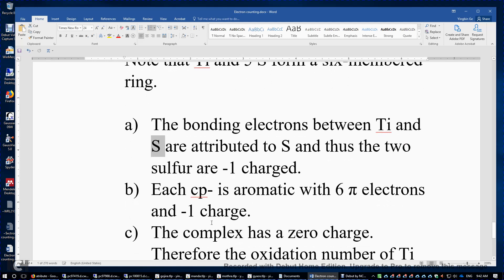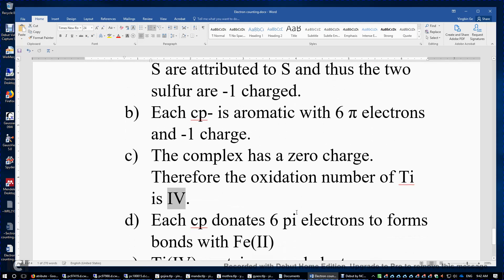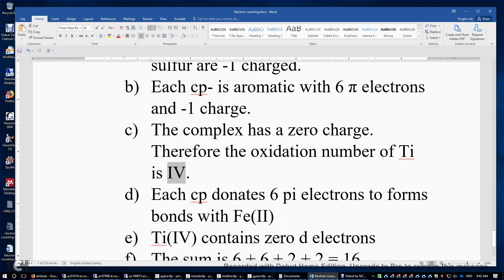So that means this titanium must have plus 4 charges. Its oxidation number is plus 4. And then look, each cyclopentadienyl anion donates 6 pi electrons to form bonds with this titanium.